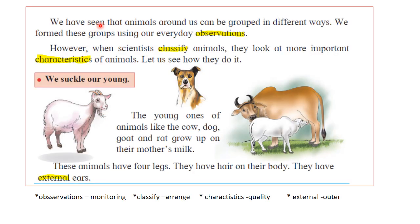We can group animals in different ways based on everyday observation, but scientists classify animals using more important characteristics. For example, the young ones of animals like cow, dog, goat and rat grow up on their mother's milk. These animals have four legs, hair on their body and external ears. All such animals are classified as mammals.